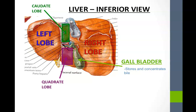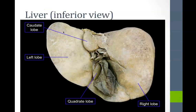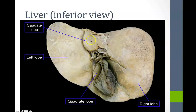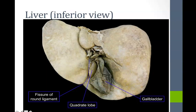The gallbladder can be seen on the inferior aspect of the liver, sitting between the right lobe and the quadrate lobe. The gallbladder stores and concentrates the bile that the liver makes. In the cadaver, we see the right lobe, left lobe, caudate lobe posteriorly, and the quadrate lobe, with the gallbladder nearby and the fissure of the round ligament.